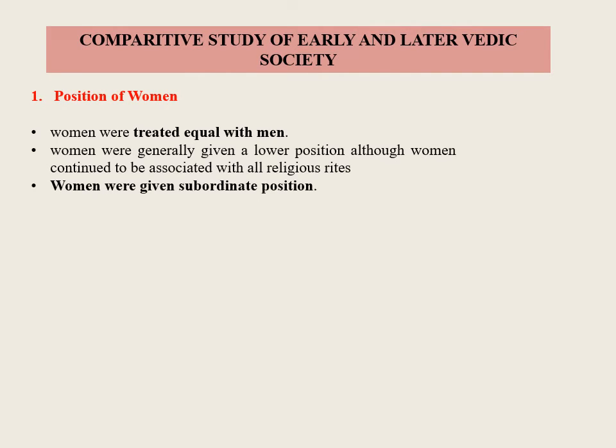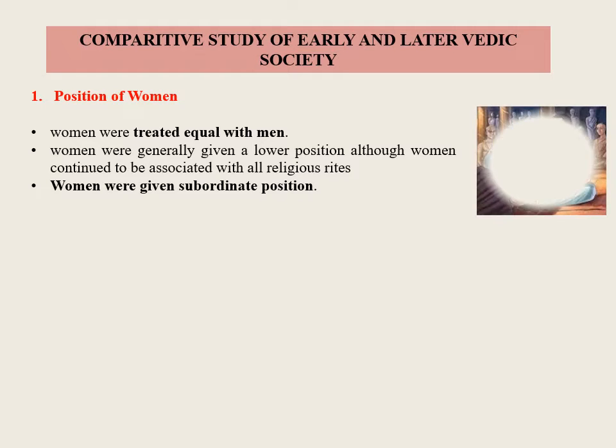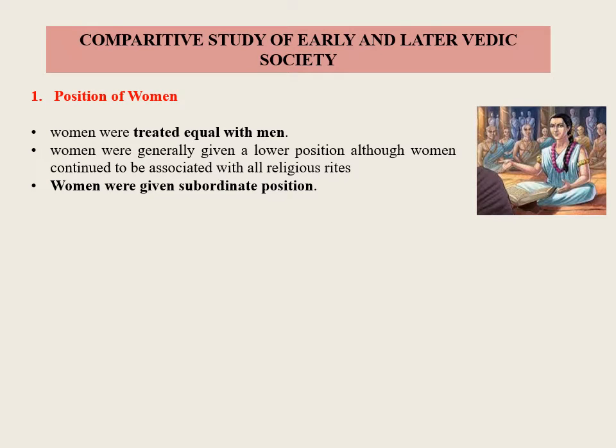Comparative study of early and later Vedic society: Many changes can be traced in the social life of later Vedic Aryans. Regarding the position of women — in early Vedic society, women were treated as being equal with men. Women could attend assemblies, took part in all religious rites, and could offer sacrifices along with their husbands. In the later Vedic age, women were generally given a lower position, although they continued to be associated with all religious rites.